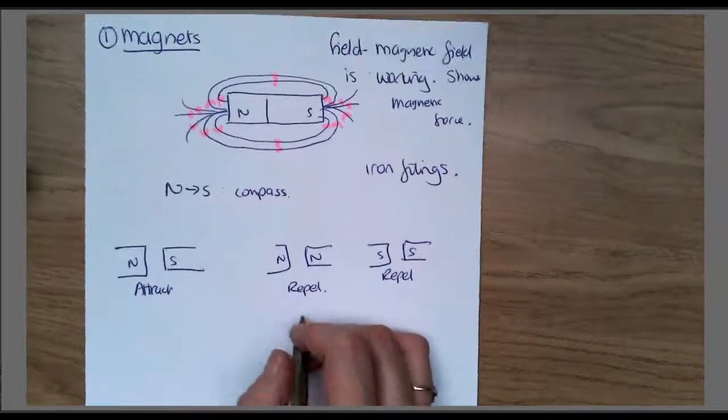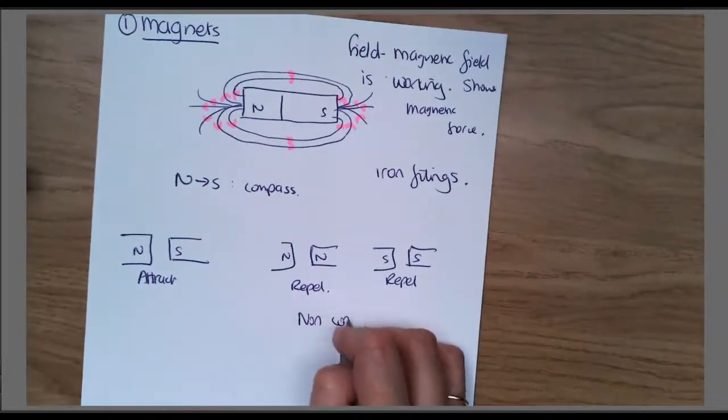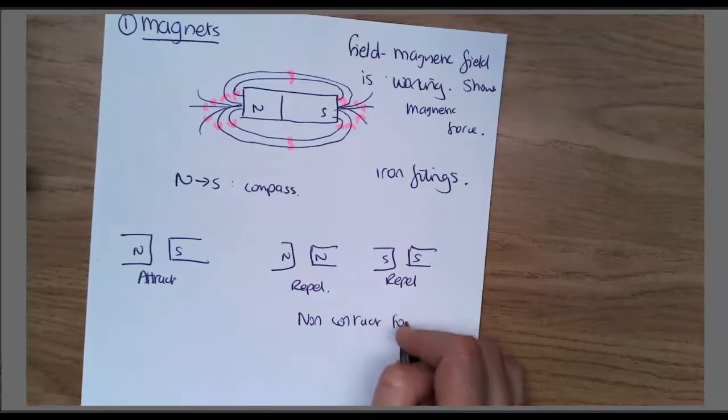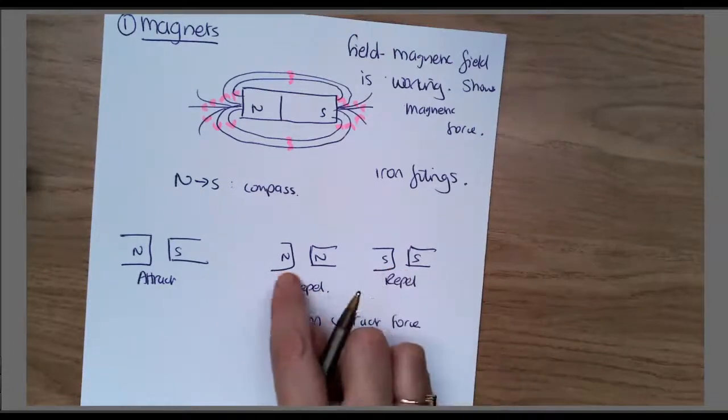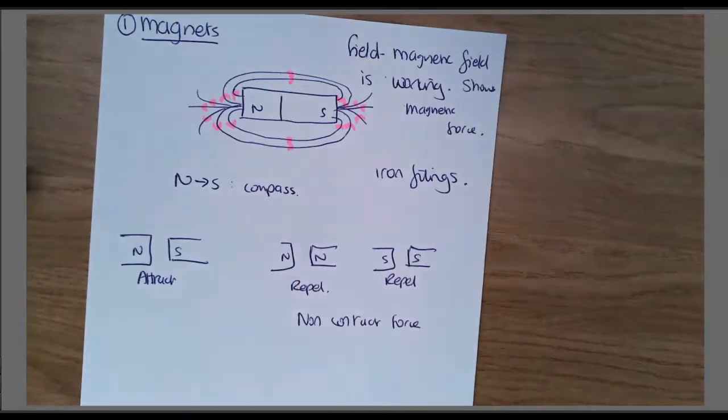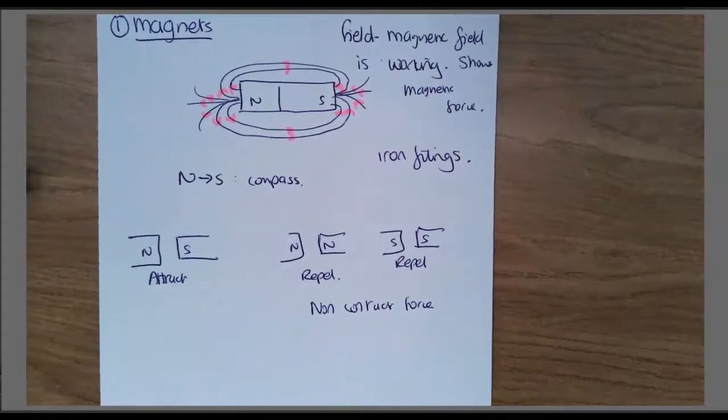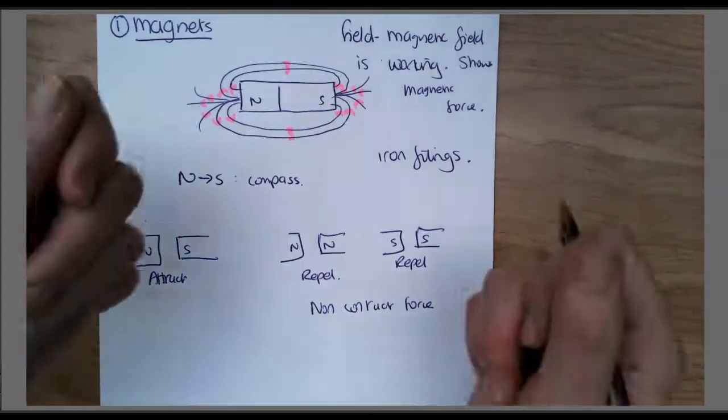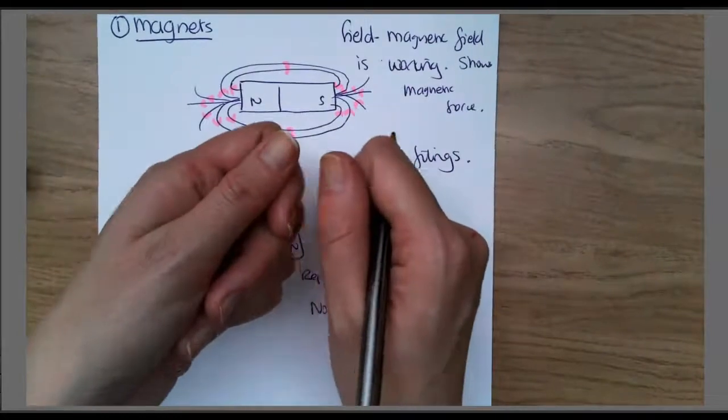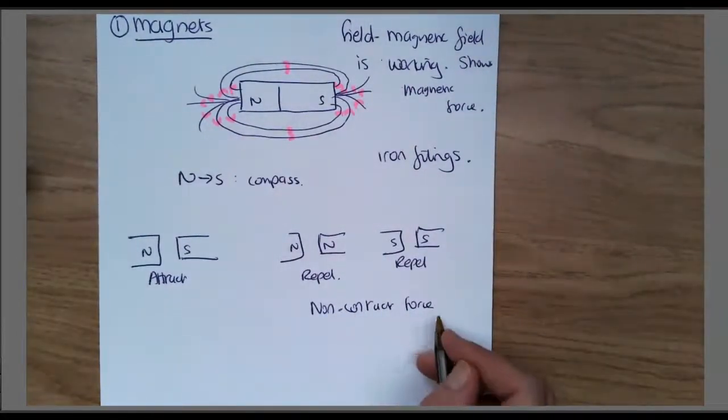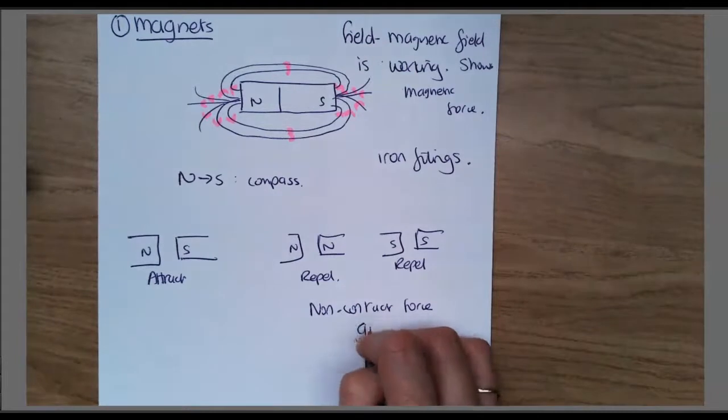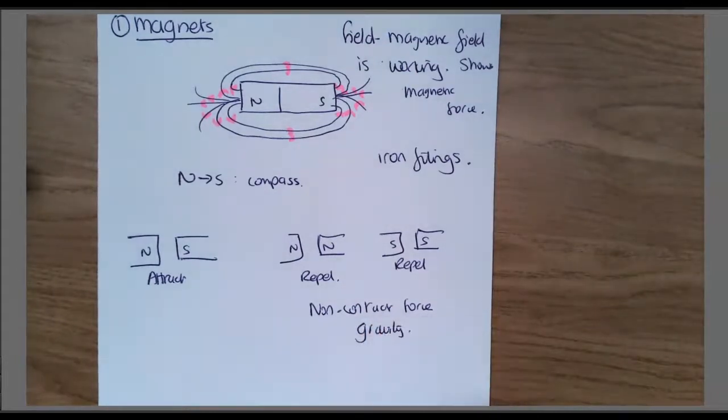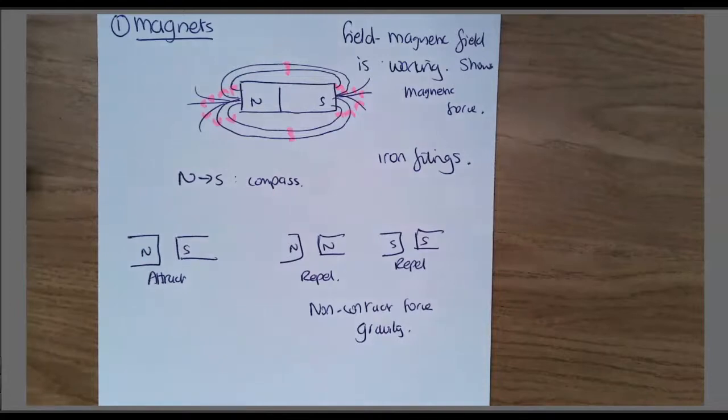You know that magnetism is a non-contact force, because you don't need to touch these magnets together to feel the force. When you push the magnets together, you could feel that force without them touching. Another example is gravity. You don't have to be standing on the earth to feel the gravitational pull.